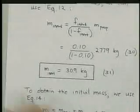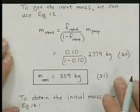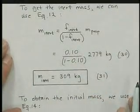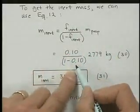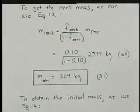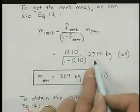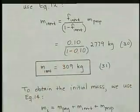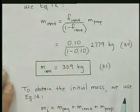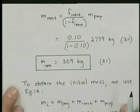We can compute the inert mass by going to the inert mass equation 13. And it's a simple value of 0.1 over 0.9 times the 2779. About 300, you'd expect, right? Because it's approximately one-tenth. It's 309 kilograms for the inert mass. That's the structure mass, mostly.